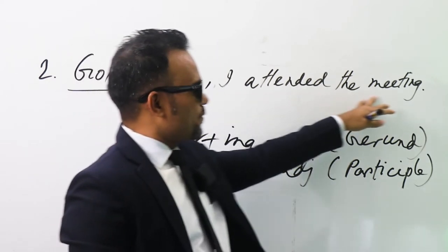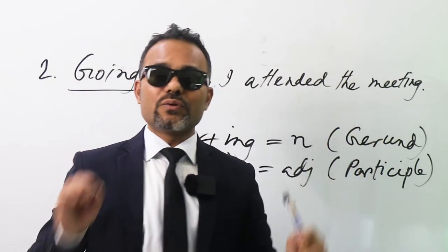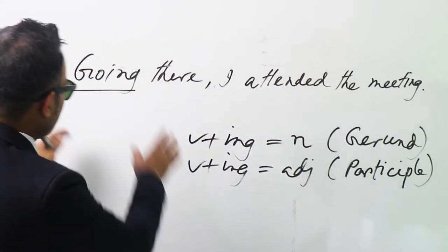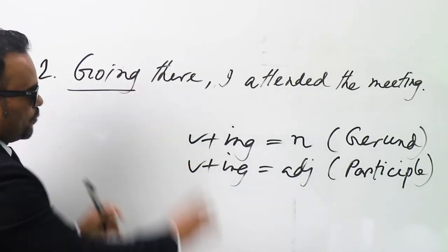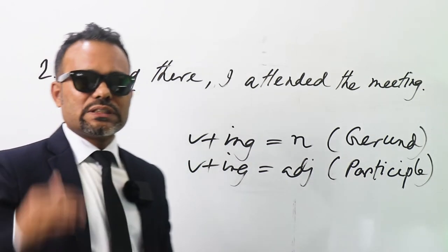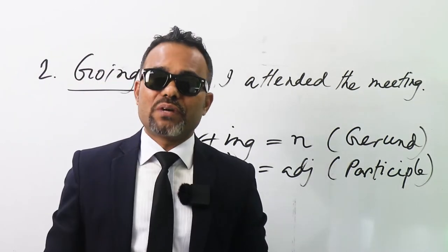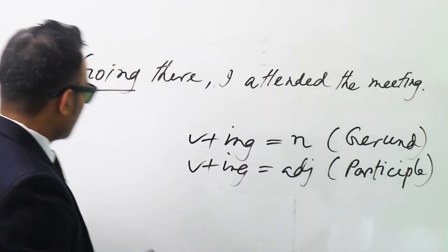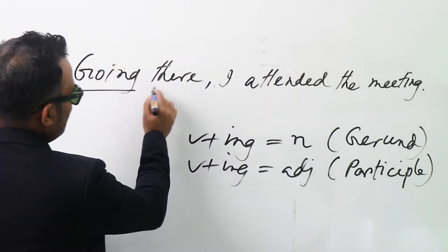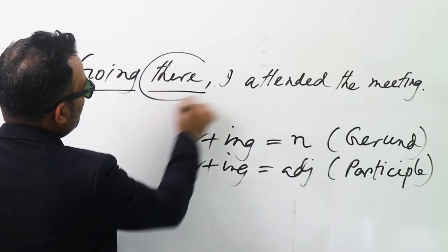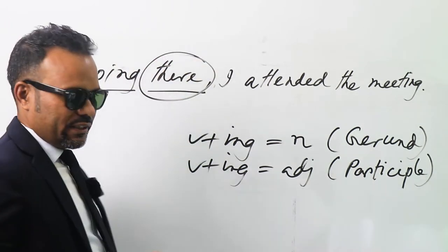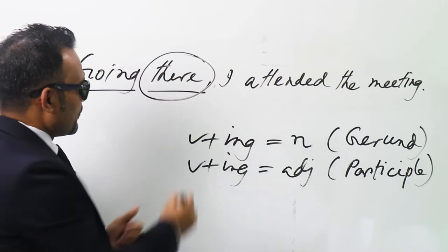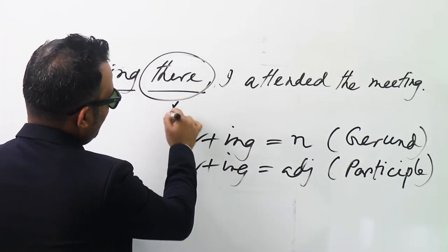After removing 'going there,' you still get the answer. It means it is removable. So this is a present participle. Another thing: look at 'there' — what part of speech is it? 'There' is definitely an adverb.